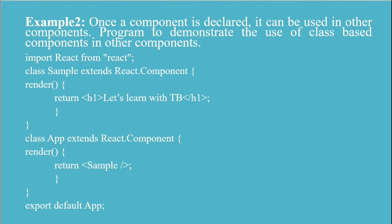The output of this program will be 'Let's Learn with TB', which is the h1 header tag returned by the Sample component. In this way, we can use components inside our App class. This is a nice example for understanding how we can create different components by inheriting from the base React component class, and use those components in the App class, making the code reusable and easy to understand.